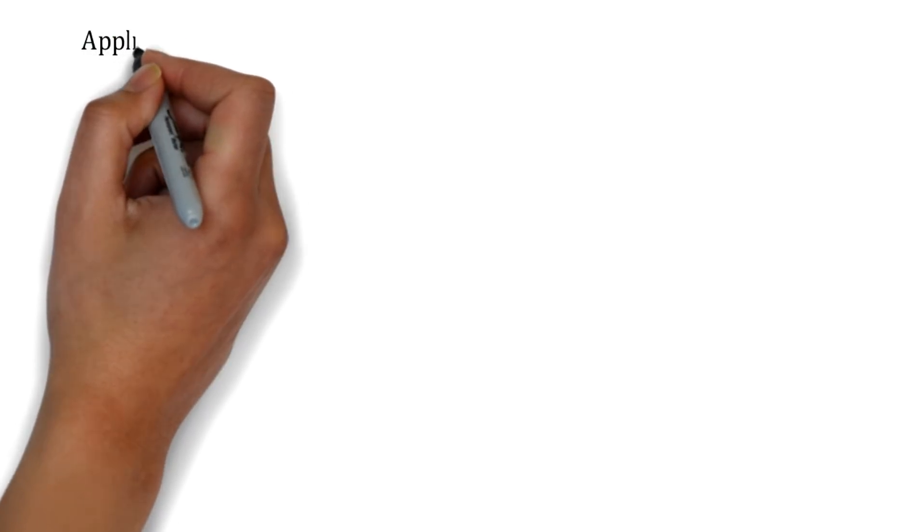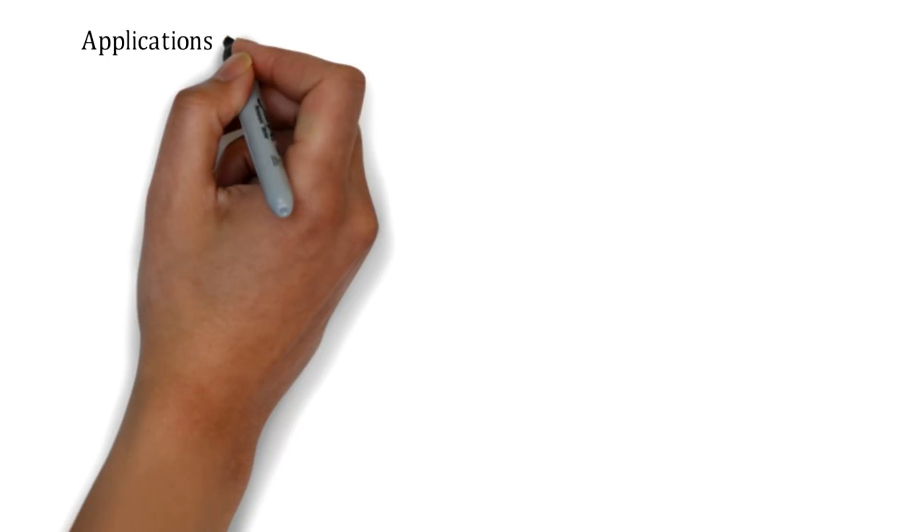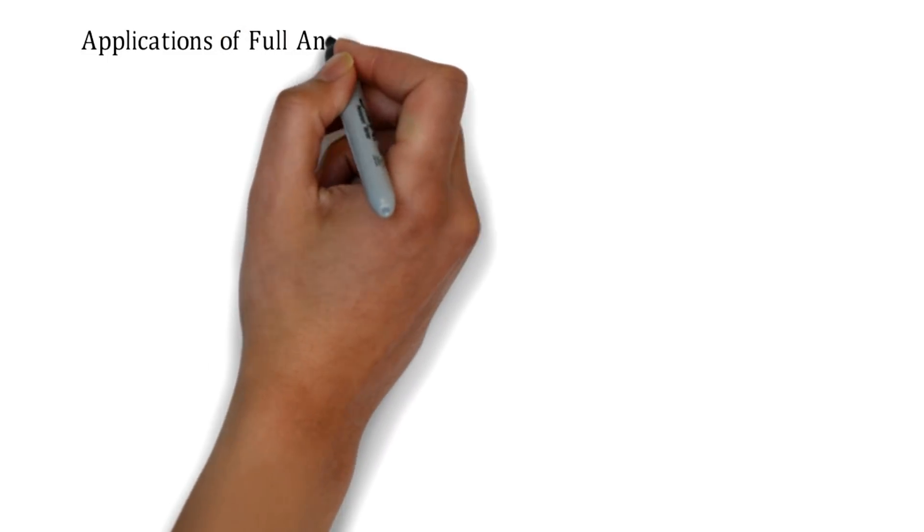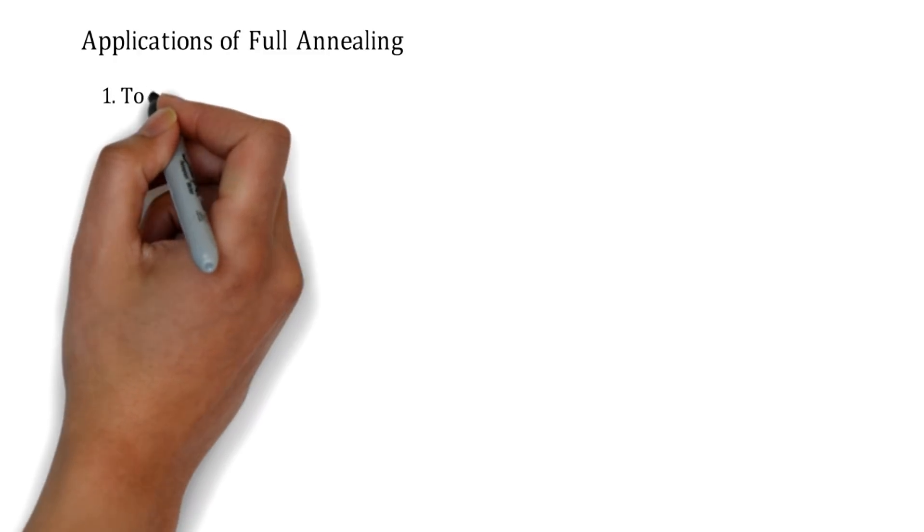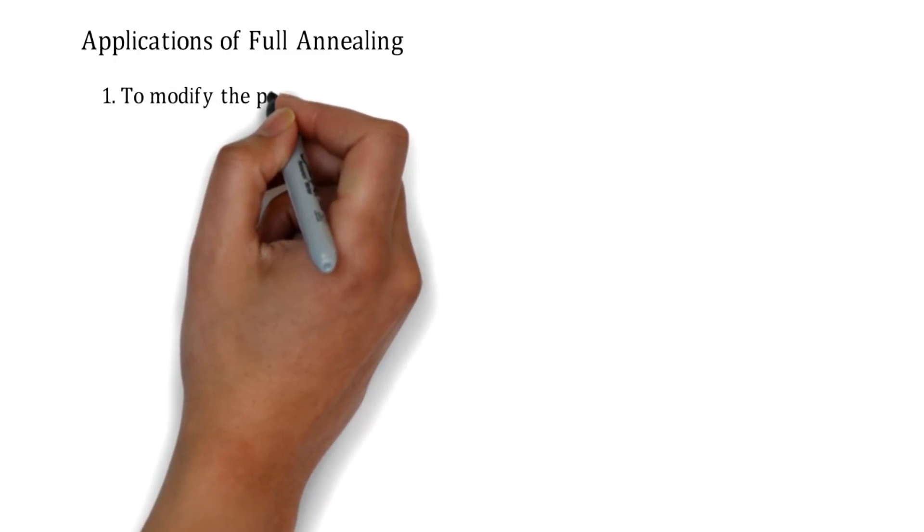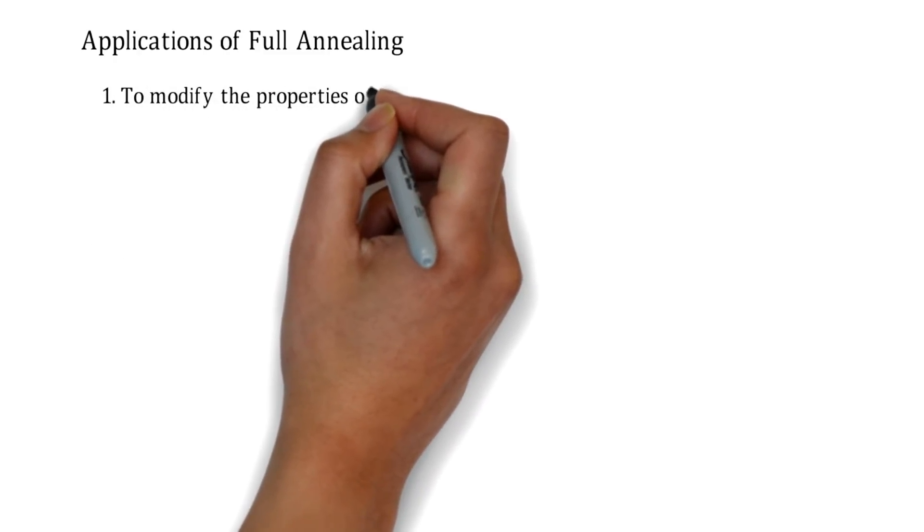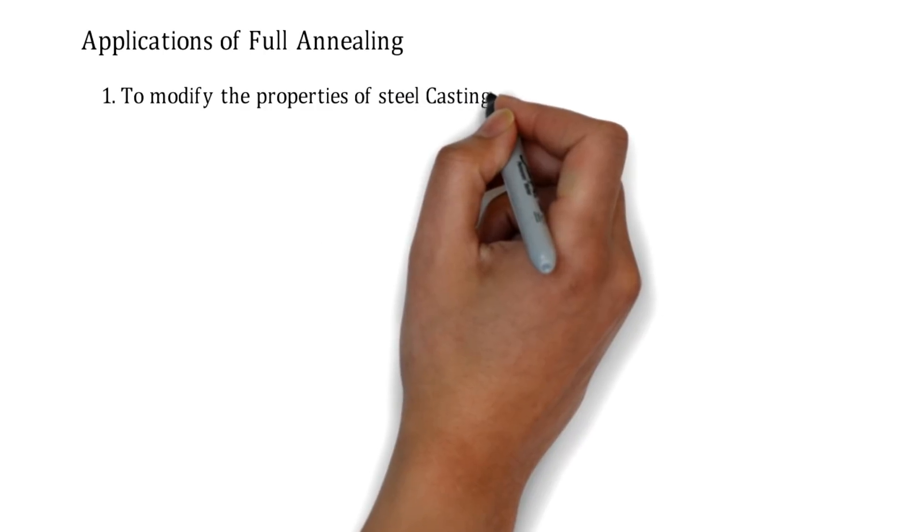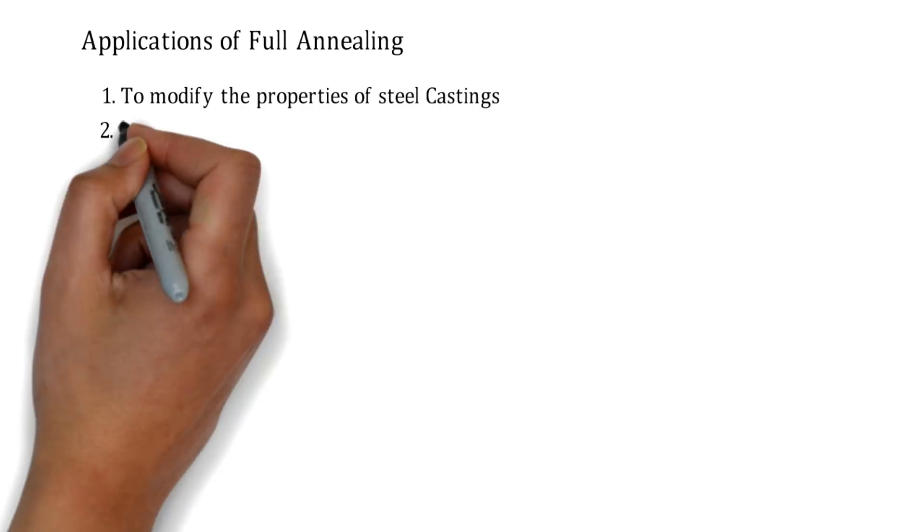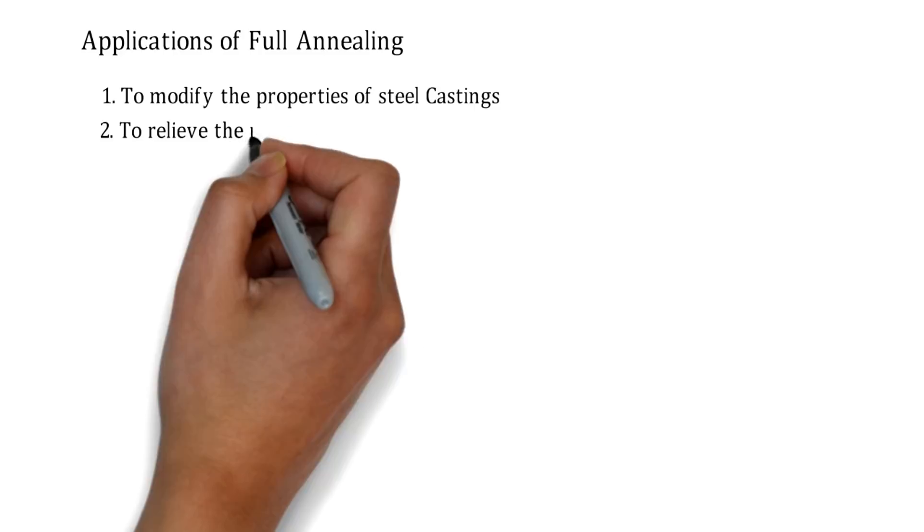Next one is the application of full annealing process. The applications are like to modify the properties of steel castings basically, and to relieve the internal stresses.